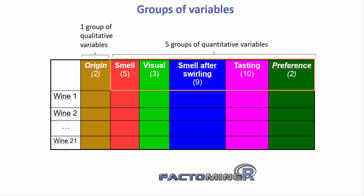One group of smells, one group of visual perceptions, one group of taste variables, and one group on smell after swirling.